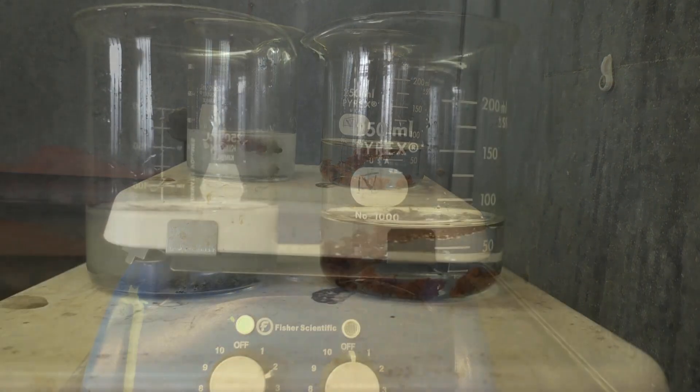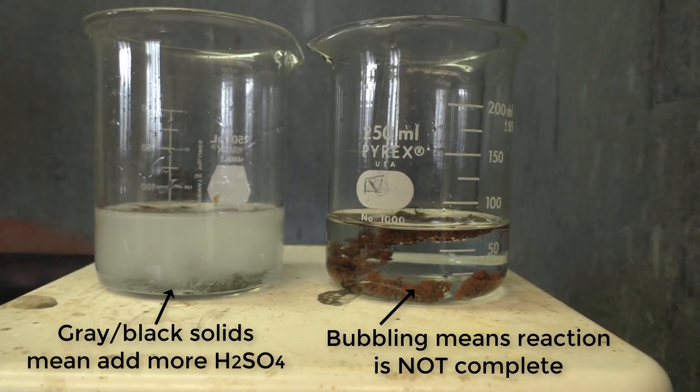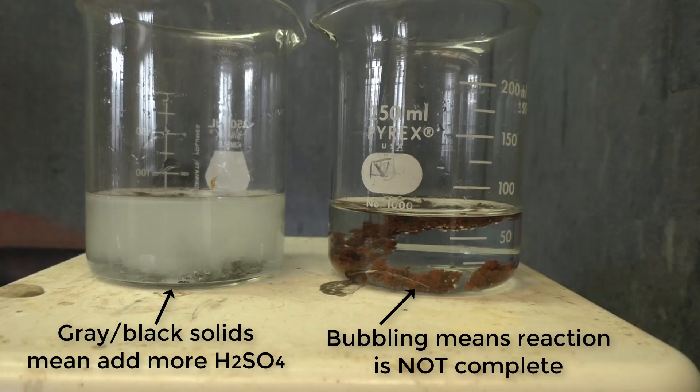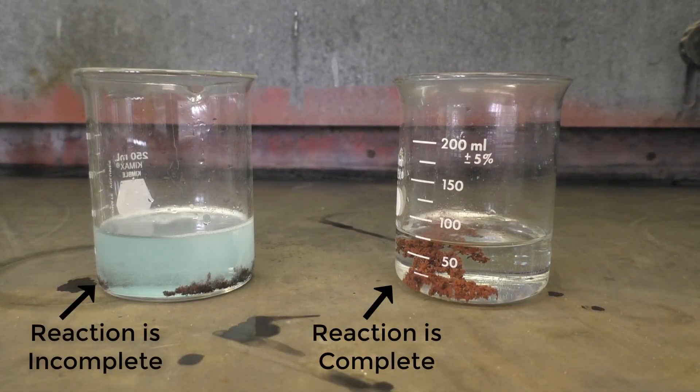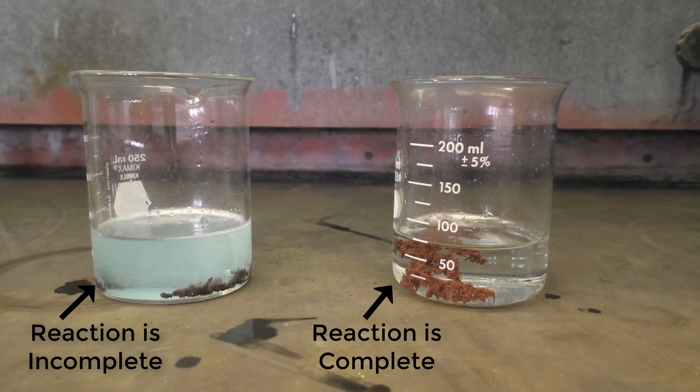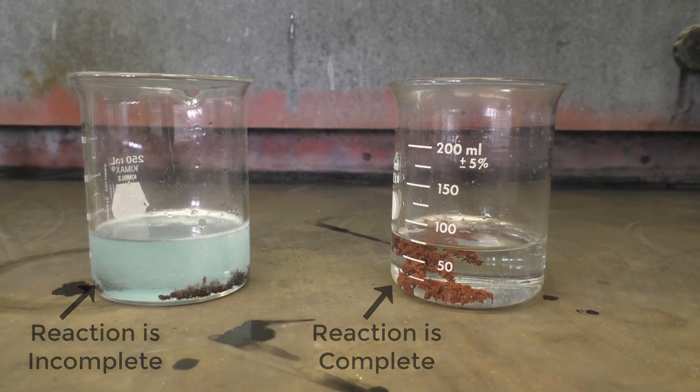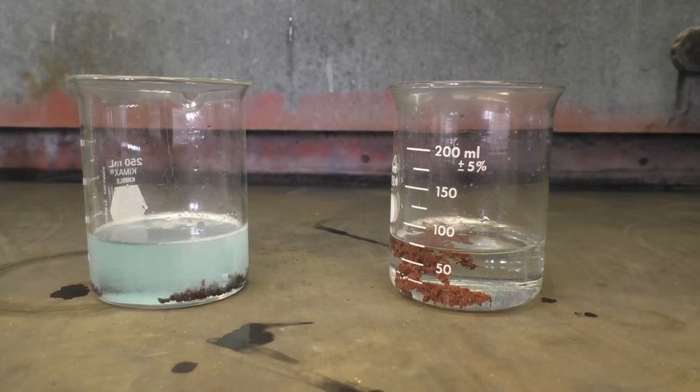And if you have some gray-black solids, this is unreacted zinc. Just add some more sulfuric acid and gently heat your flask in the hood. The reduction of your copper is fully complete when the solution is colorless, has no gray-black solids, and is no longer bubbling.